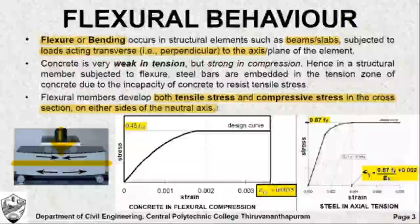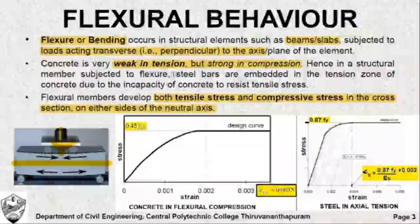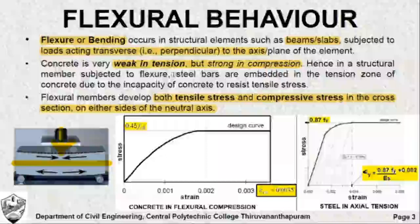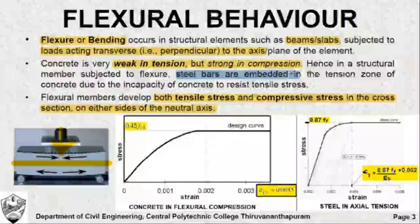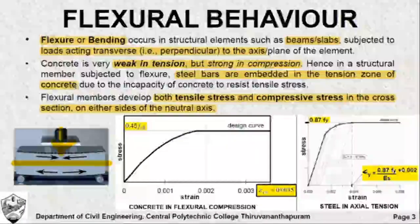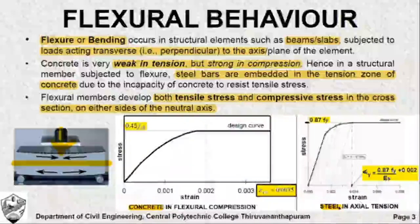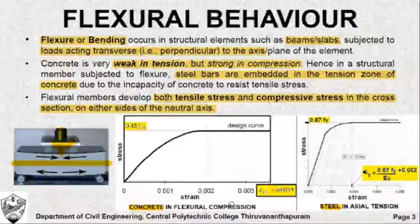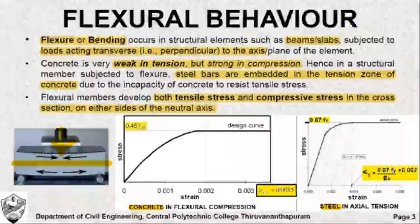Concrete is very weak in tension and strong in compression. Since concrete is weak in tension, it is incapable of taking the tensile stresses developed in such flexural members. Hence we embed steel bars in the tension zone of the concrete. We completely neglect the effect of concrete on the tension side of the flexural member, so we are interested only in the flexural compression.